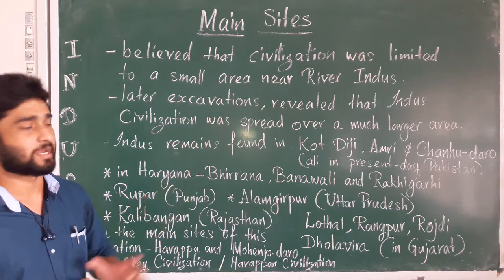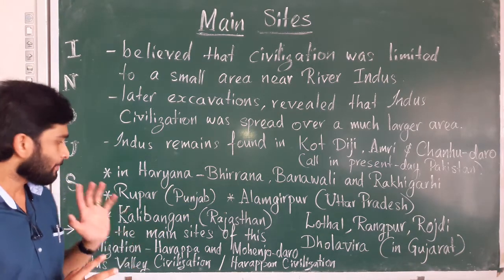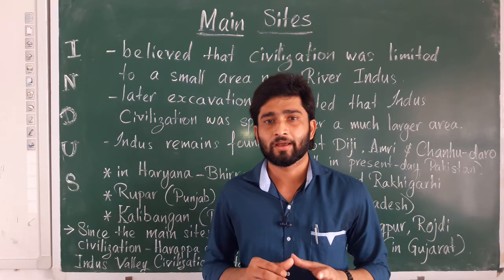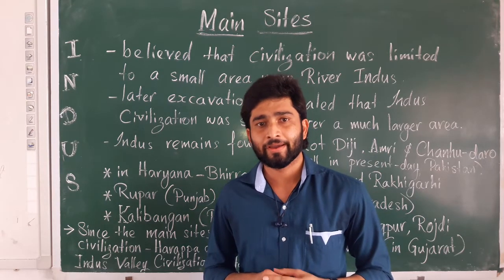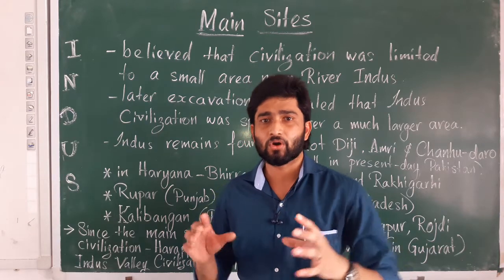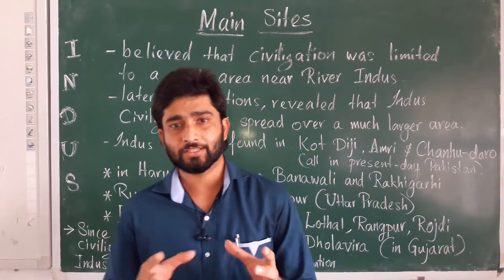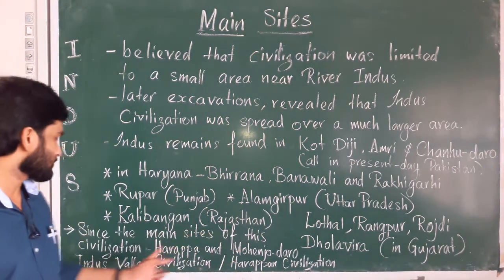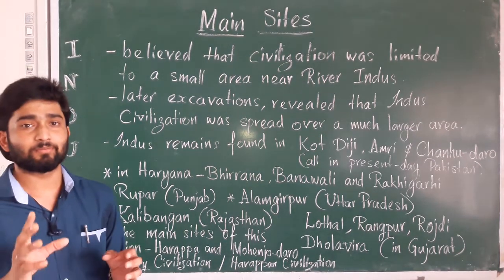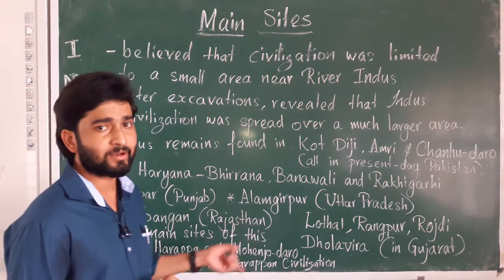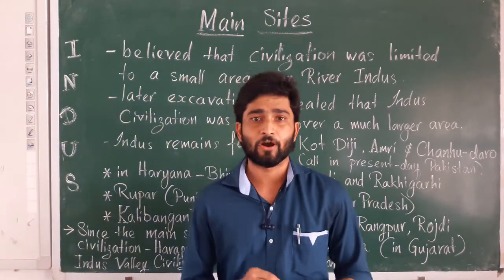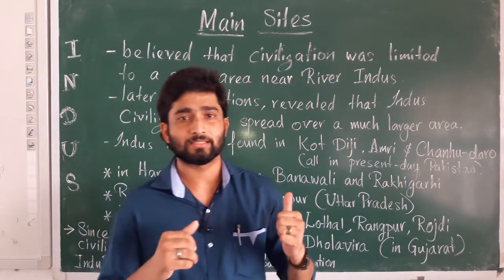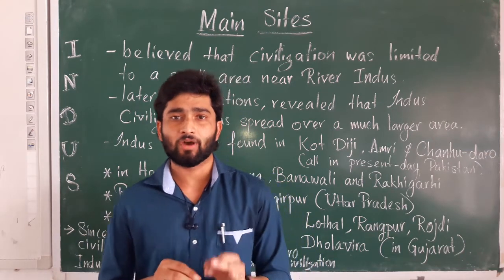Another important point is that the Indus Valley Civilization is also known as the Harappan Civilization. Why is this civilization called Indus Valley Civilization? It is because the main sites — Harappa and Mohenjo-daro — were found nearby the river Indus, so historians called it the Indus Valley Civilization.